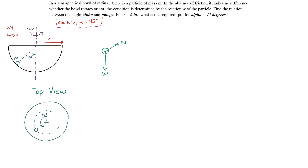The particle is rotating along the bowl at some arbitrary distance, which we'll call big R, where R is greater than zero but less than little r, where little r equals 6 inches. So big R is less than 6 inches. From the top-view diagram, it is clear that the centripetal acceleration points along this plane — it lies on the plane perpendicular to the y-axis and points inward directly towards the center of the bowl. In this diagram, the centripetal acceleration actually points in the x direction.